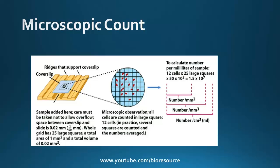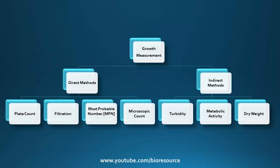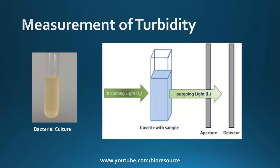The other indirect methods include turbidity, metabolic activity, and dry weight measurements. Turbidity is most commonly used in bacterial cultures. As the bacteria grow, the turbidity of the culture media increases. Using a spectrophotometer, optical density of the culture can be identified. A well-grown culture may require dilution.